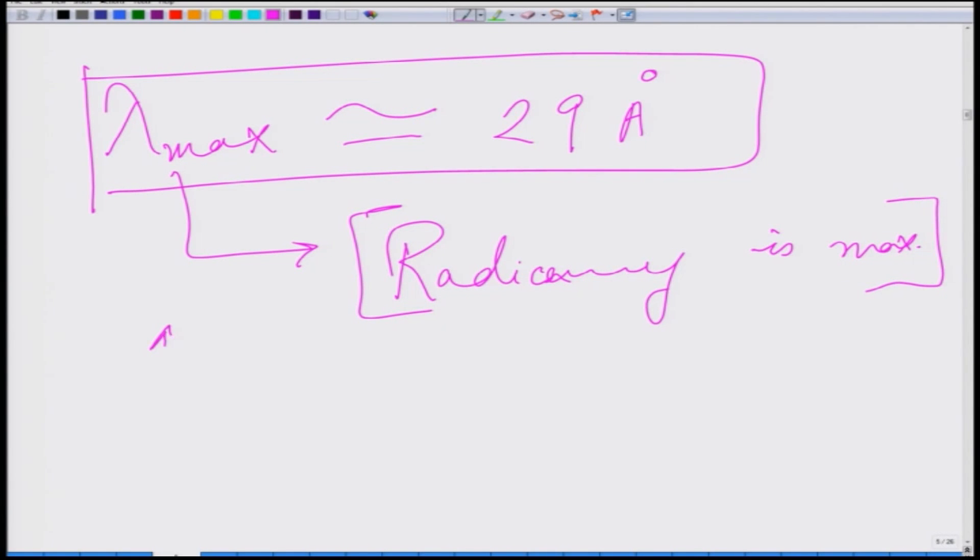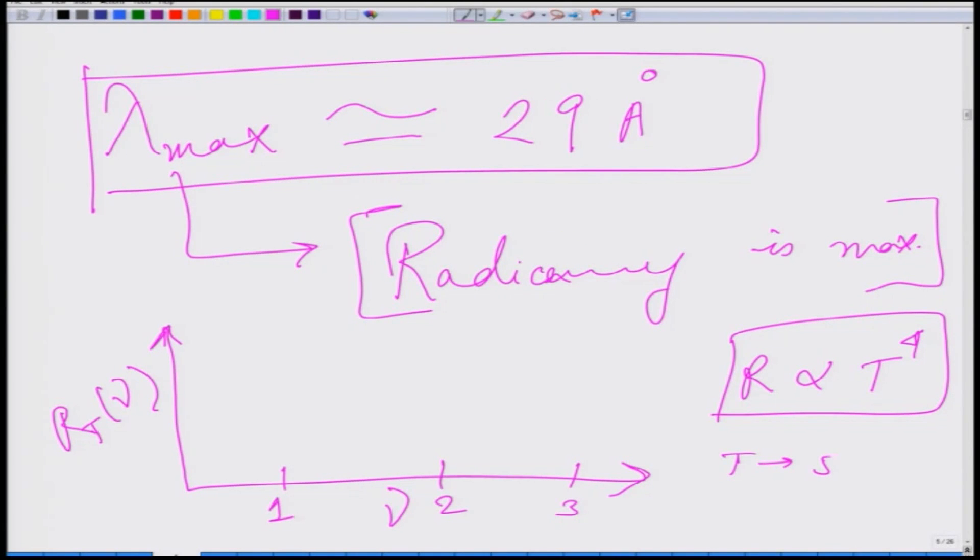Now if we recall from the lecture note we plotted this R T nu where R is proportional to the absolute temperature to the power 4. If I plot it as a function of nu I get that when T suppose is 500 Kelvin then the nu max is right here. Correspondingly the R T is here, this is a maximum value of the radiance. So what I get is the peak is here and then it goes like this.